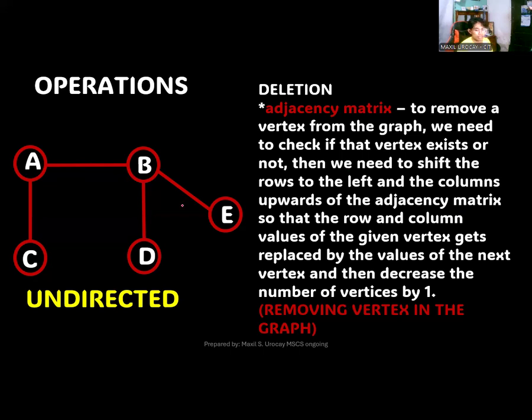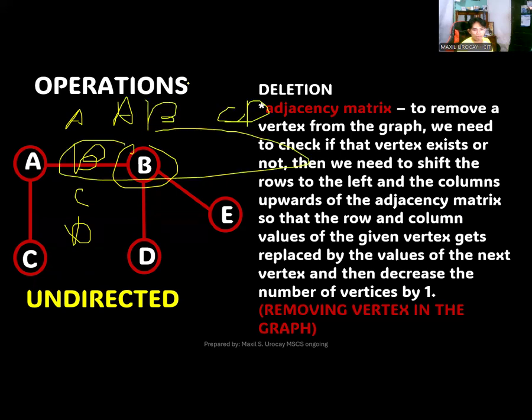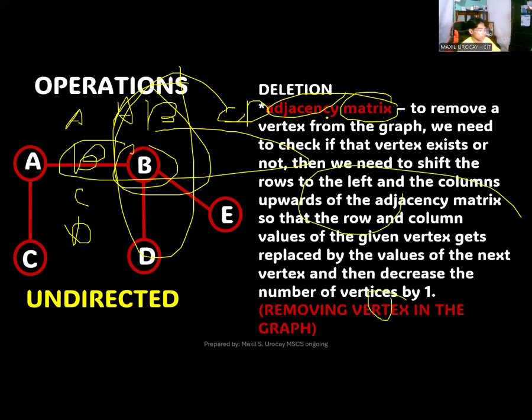For removing vertices in the graph, if you remove a specific item, for example if you want to remove B, you will automatically remove both the B rows and column. You will just automatically remove that in your matrix since you actually remove a certain vertex in your adjacency matrix.